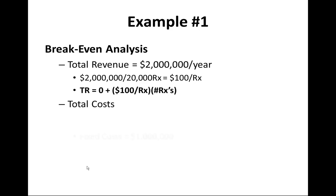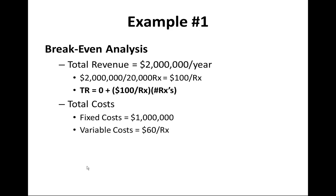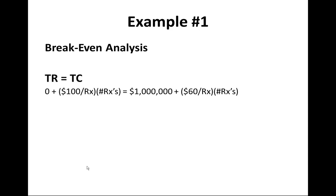Now we set up our total cost equation. We have a fixed cost of $1 million and a variable cost of $60. So the total cost equation equals $1 million plus $60 multiplied by X (number of prescriptions). Number of prescriptions multiplied by the cost per unit plus the million dollars in startup costs gives you the total cost equation. We want to find when total revenue equals total cost — when does the number of prescriptions make both equations equal?